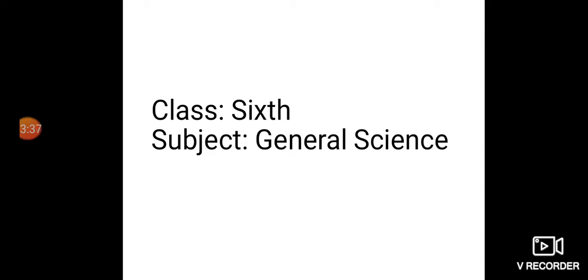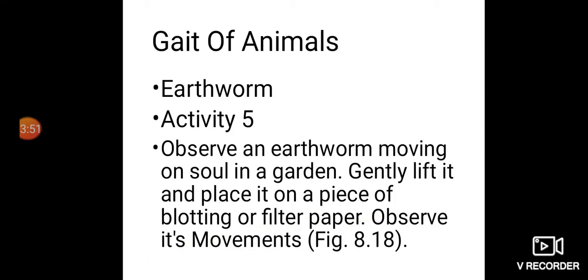Now, are muscles and bones always required for movement? How do other animals move? Do all animals have bones? What about an earthworm or a snake? Let us study the third part of body movements — the gait of animals. First, we are going to see the earthworm. Activity 5, page number 73.